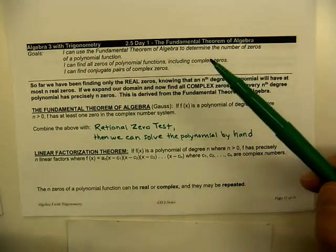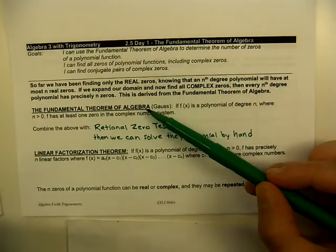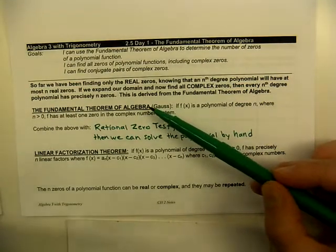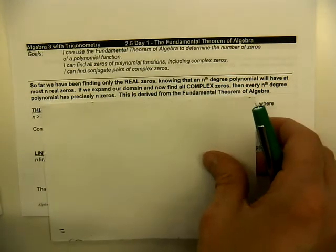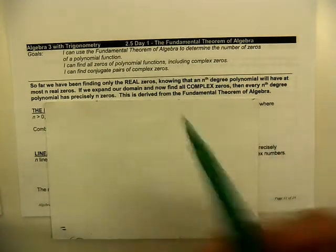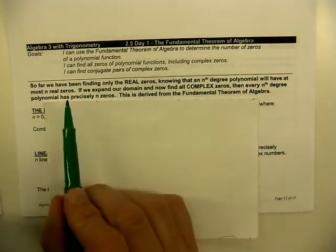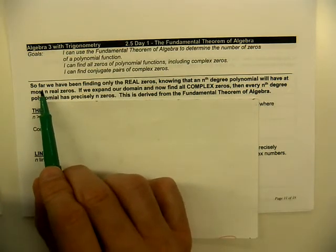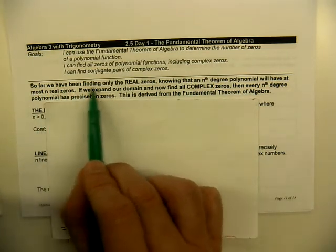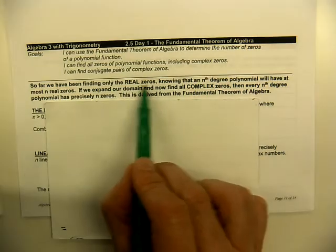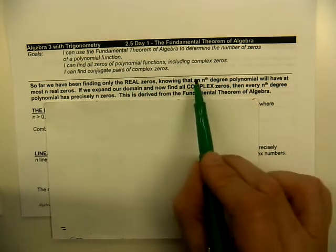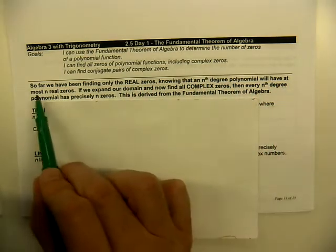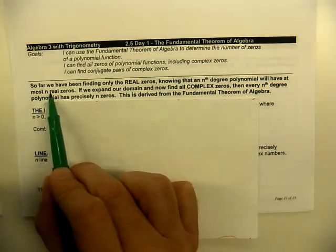Today we're looking at using what we call the fundamental theorem of algebra to help us solve polynomials. We've been solving polynomials so far and when we've been doing that we have only been finding the real zeros, the real numbers, knowing that an nth degree polynomial will have at most n real zeros.